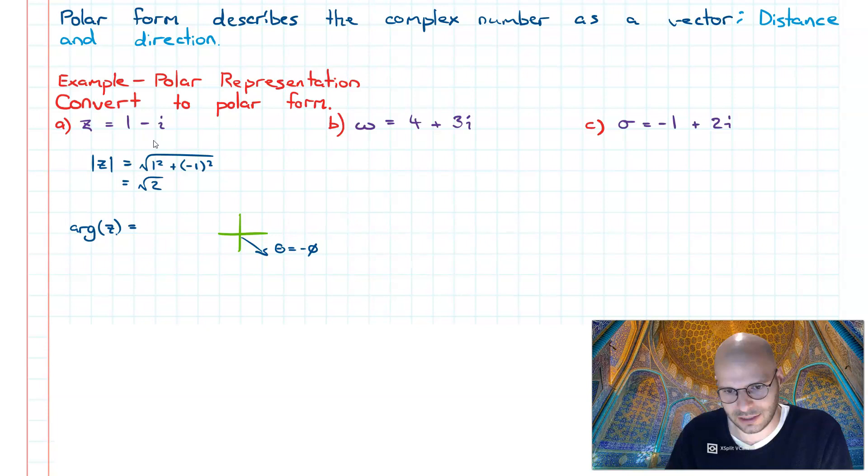Which implies that our theta is going to equal negative pi over four. So in other words, we have to go minus inverse tan of the imaginary over the real, just like that. And because it's one over one, I simply know it's going to be negative pi on four.